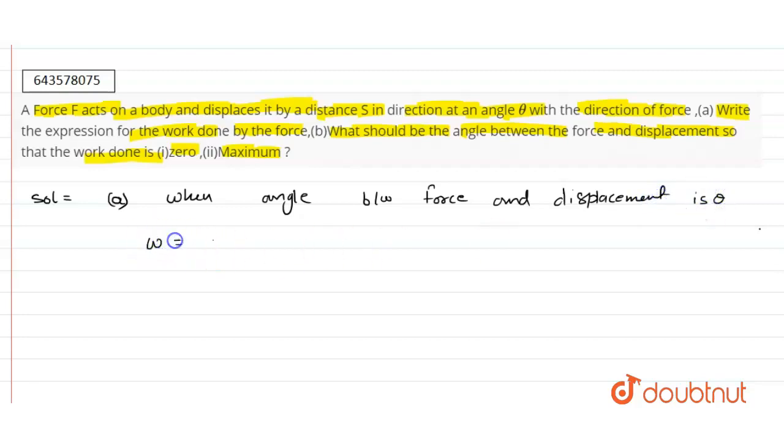We know that work is the dot product of force and the displacement. By solving this, we will get work equal to F·S cos θ. This is the expression when the angle between the force and the displacement is theta.